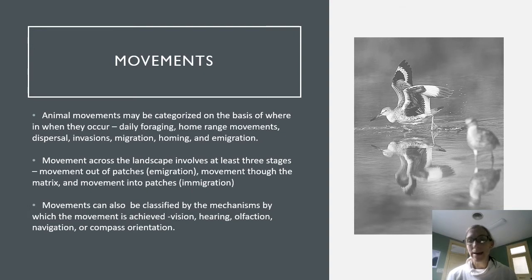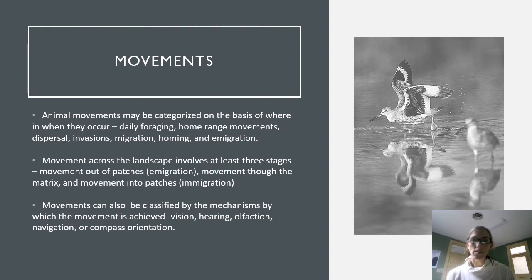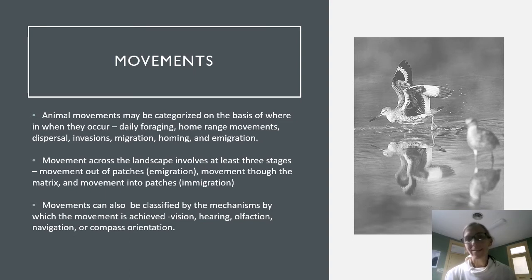Movements can be categorized on the basis of where and when they occur in space and time. We've got home range movements, dispersal movements, invasions, migration, homing, and immigration, and we'll touch on each of those. Movements can also be classified by the mechanisms by which they are achieved — how does the organism orient — and we can think of the use of senses: vision, hearing, olfaction, navigation, and compass orientation that allow for that.